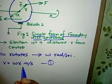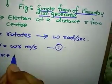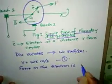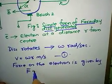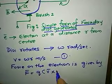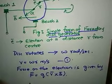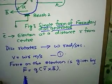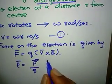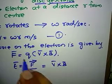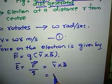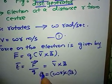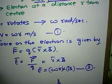The force exerted on the electron is given by F = q into v-bar into B-bar. This we have seen in our previous discussions: force is given by the product of charge into velocity into field. If we want the electric field intensity E-bar, then E-bar = F-bar / q = v-bar into B-bar. Since v = omega r, we get E = omega r into B. This will be the expression for the electric field intensity.